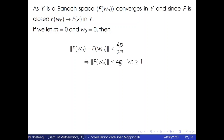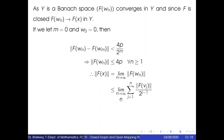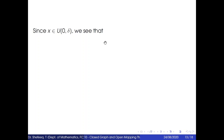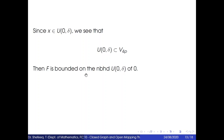Therefore the norm of f(x) equals the limit as n → ∞ of the norm of f(wn), which is less than or equal to the limit as n → ∞ of the sum from j=1 to n of the norm of f(vj) / 2^(j−1), equal to the sum over all j of the norm of f(vj) / 2^(j−1), which is less than or equal to 4p. Therefore x belongs to V₄p. Since x belongs to U(0, δ), U(0, δ) is a subset of V₄p, so f is bounded on the neighborhood U(0, δ) of 0, implying f is continuous by Theorem 6.2.